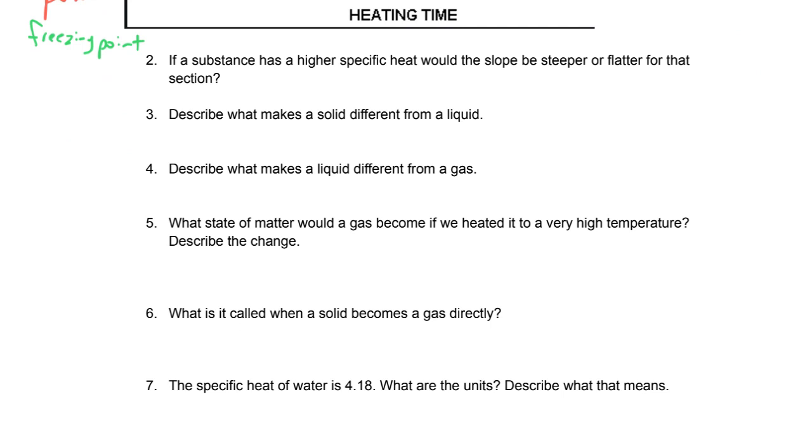If a substance has a higher specific heat, would the slope be steeper or flatter? The correct answer there is it would be flatter. Think of this as it just takes more heat to change the temperature. So we have to travel further to the right to move up the same amount on a heating curve. So it would be flatter.